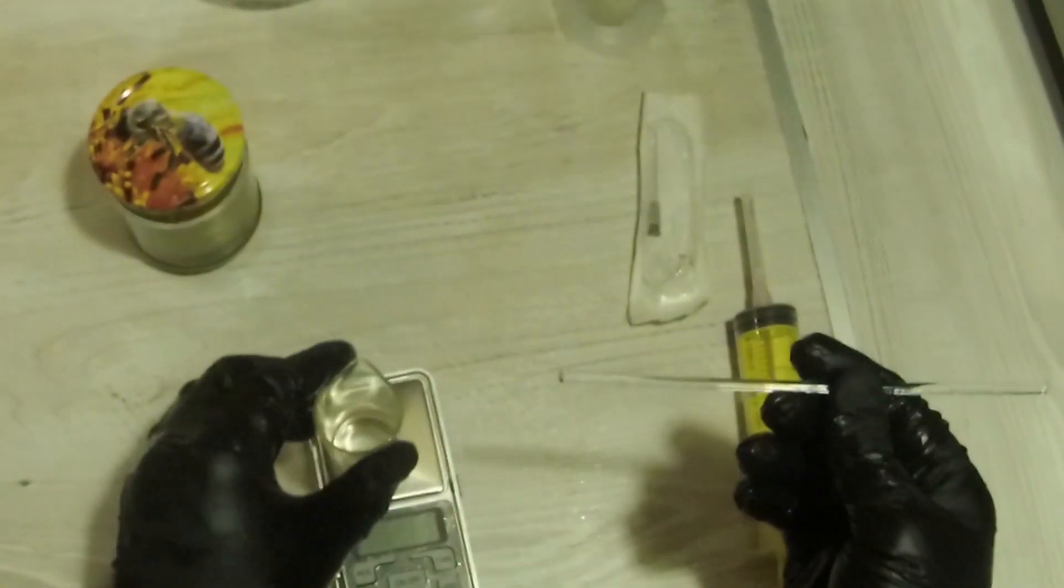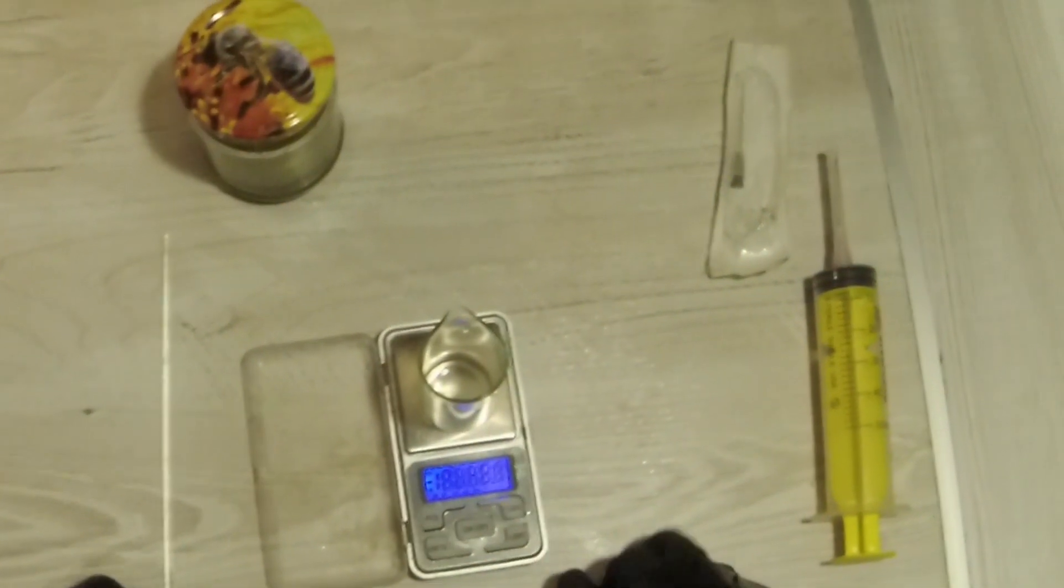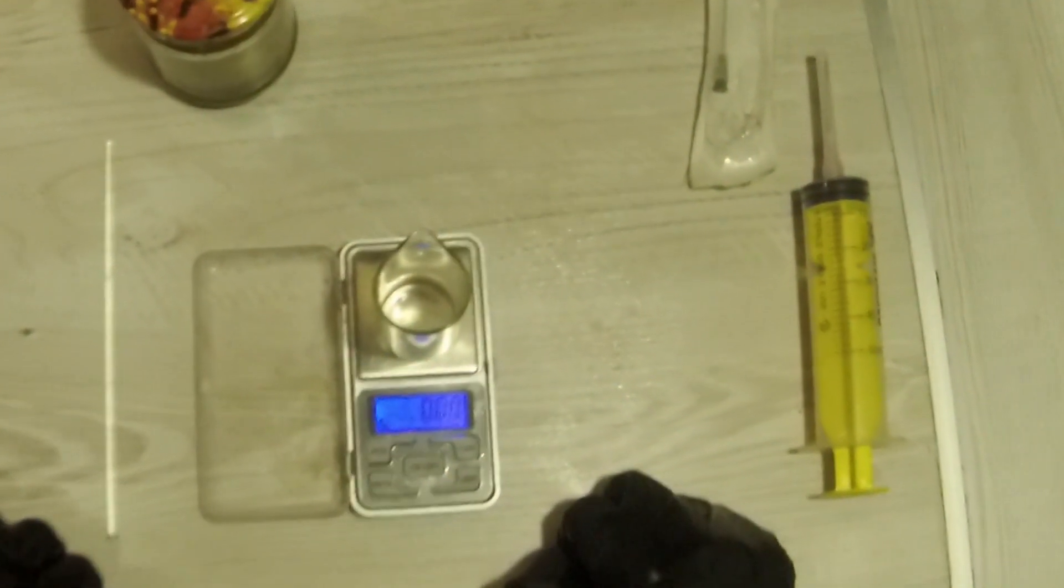In order to create liquid mycelium or liquid culture, different ingredients are used. Honey or fructose are the most common ones. We will be using honey because we believe it has more nutrients for the growing mycelium.